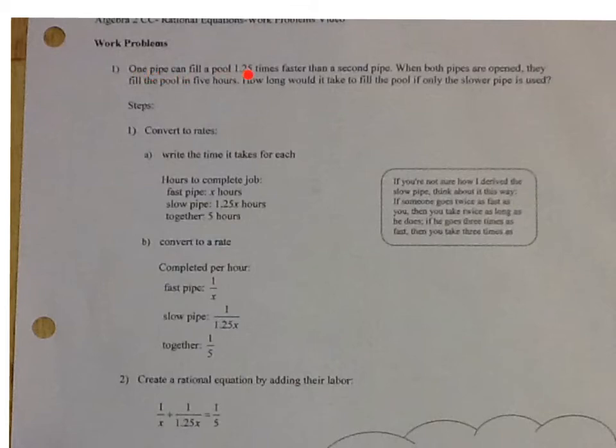So it says one pipe can fill a pool 1.25 times faster than a second pipe. So that means the second pipe is slower. So we know that the second pipe will take 1.25 times longer. So it says when both pipes are open, they fill the pool in 5 hours. How long will it take for the pool if only the slower pipe is used?